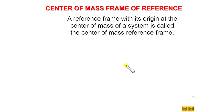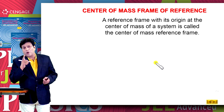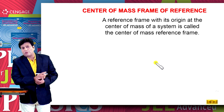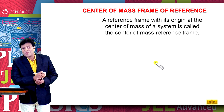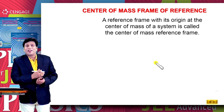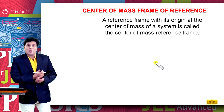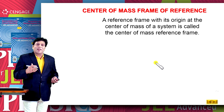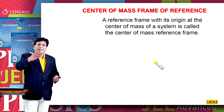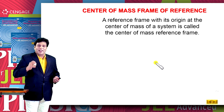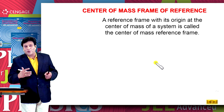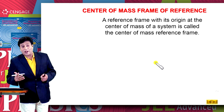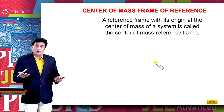Now let us ask a very simple question: what is the velocity of the center of mass in the center of mass frame of reference? It is 0, of course, because it is the same as: suppose you are driving in a car and I ask you what is the velocity of you with respect to the car — that is 0 of course.